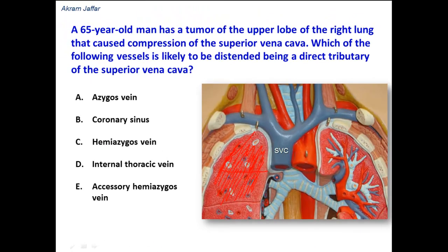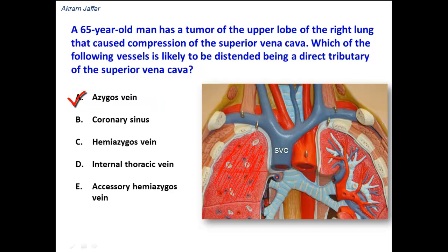So let's see the options here. Azygous vein? Yes, this is the correct option. It is the arch of the azygous that opens into the superior vena cava — it's a direct tributary of the superior vena cava, and might get distended because of the compression of the superior vena cava.